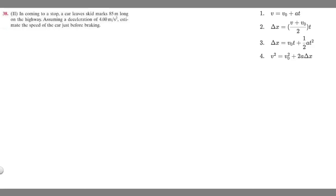In this problem, we're told that in coming to a stop, a car leaves skid marks 85 meters long on the highway. Assuming a deceleration of four meters per second squared, we need to estimate the speed of the car just before braking.